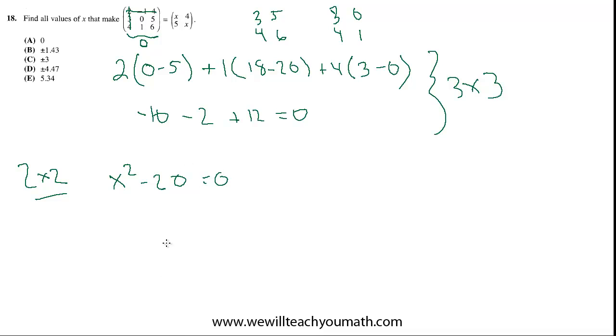So now we have this quadratic equation to solve. We can add 20 and take the square root. So x squared equals 20. And therefore, x equals positive and negative root 20.